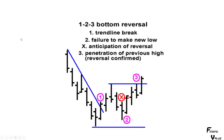Here we have a 1-2-3 bottom reversal pattern - you can also flip it over for a top. This is a huge downtrend line. Step one: it breaks the downtrend line. Step two: it creates a higher low - this is a lower low, this is a higher low. Step three: it needs to make a higher high above the prior high. So: step one, break the downtrend; step two, higher low; step three, higher high. This right here is a bottoming process that went from a downtrend to a new uptrend.